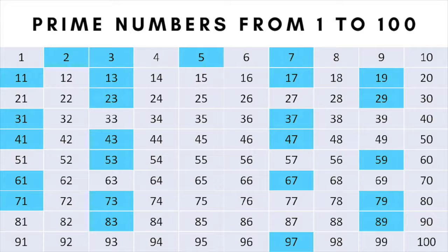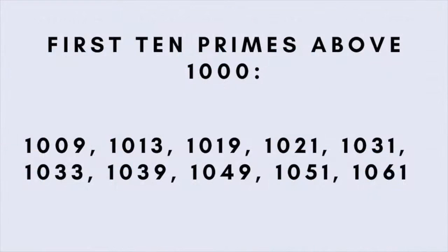Gradually, as they get larger, the gaps between them tend to widen. For example, after a thousand, these are the next ten prime numbers.